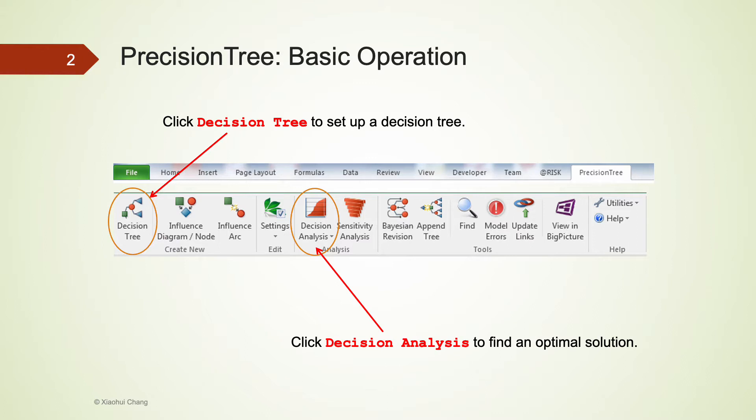Two icons on the very top are quite useful for this class. The Decision Tree is to set up a decision tree. After building the tree, we can click on the Decision Analysis icon to find an optimal solution for our decision problem.